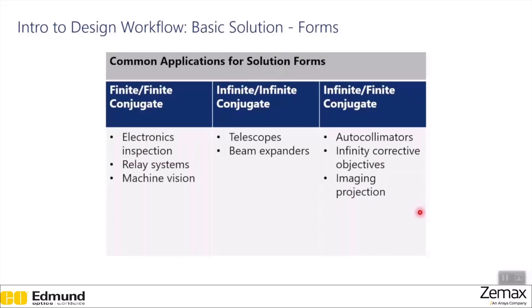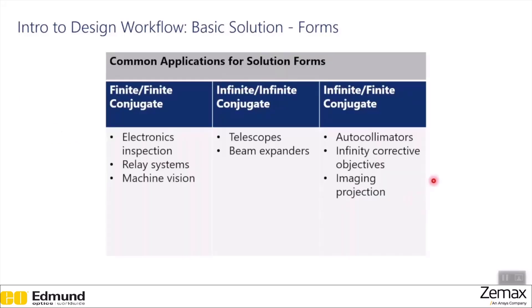To help you categorize what your application type might need, here are some common applications for the three different solution forms. For finite-finite conjugate, we have electronics inspection, relay systems, and machine vision. For infinite-infinite, we have telescopes or beam expanders. And for infinite-finite conjugates, we have autocollimators, infinity corrective objectives, and imaging projections.